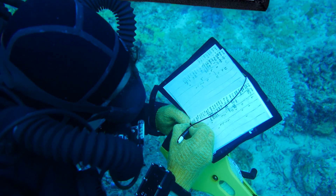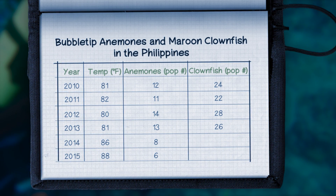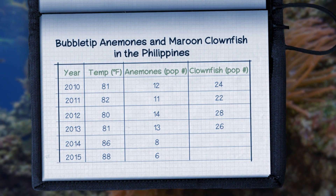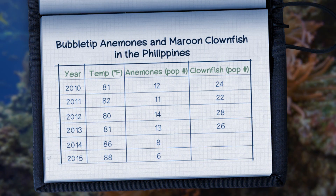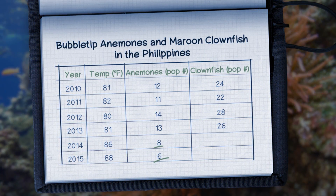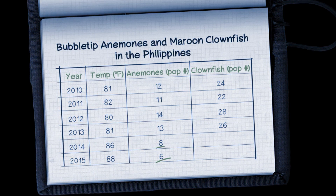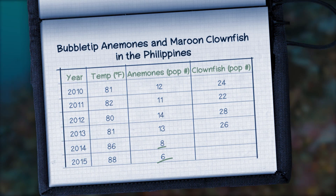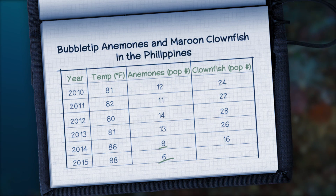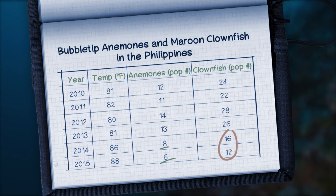Now imagine you travel back to the same reef to continue your research. What trends do you notice over the following two years? Given what you know about this mutualistic relationship, can you predict the effect this drop in bubble tip anemones will have on maroon clownfish populations? In this example, extreme temperatures led to a decrease in anemones, and given what we learned about the population ratio, we can predict a similar drop in maroon clownfishes.